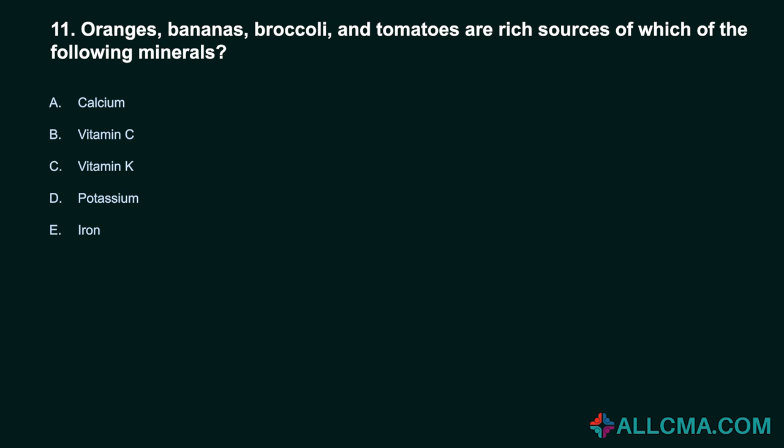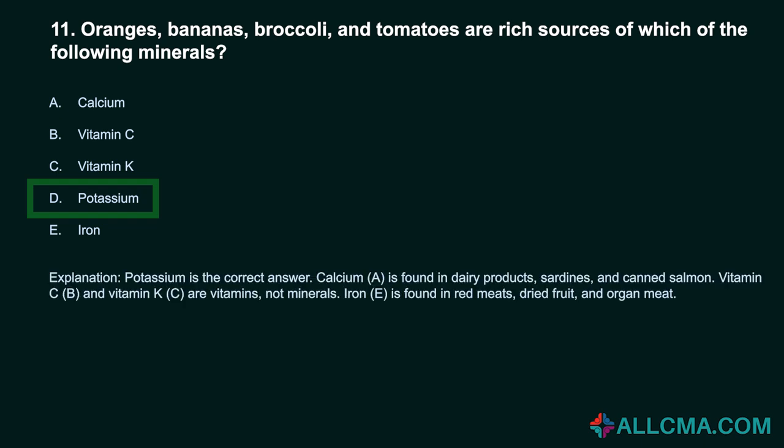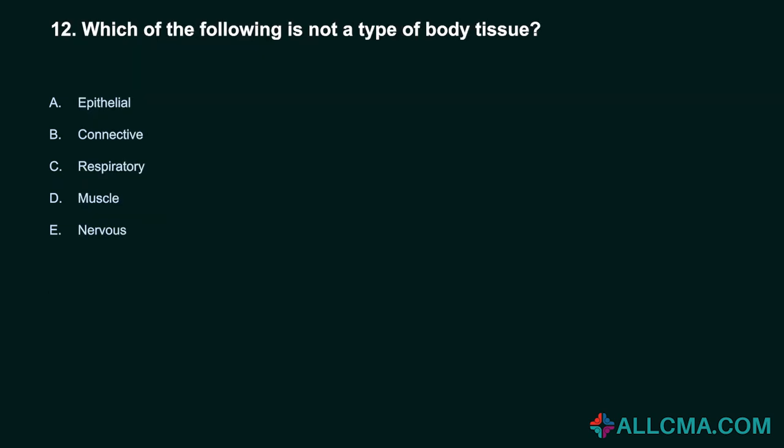Question 11: Oranges, bananas, broccoli, and tomatoes are rich sources of which mineral? a) calcium, b) vitamin C, c) vitamin K, d) potassium, e) iron. Correct answer: D, potassium. Calcium is found in dairy products, sardines, and canned salmon. Vitamin C and vitamin K are vitamins, not minerals. Iron is found in red meats, dried fruits, and organ meat.